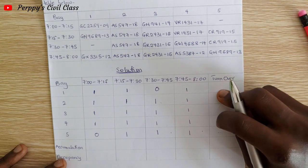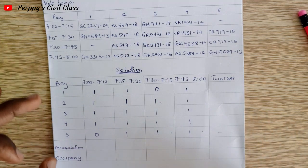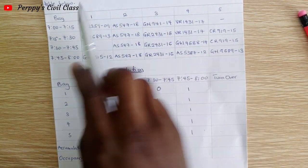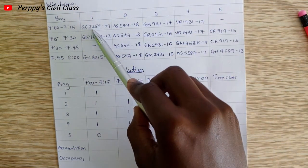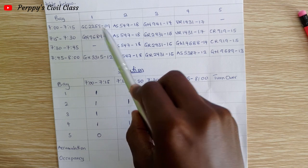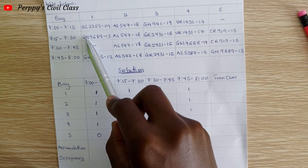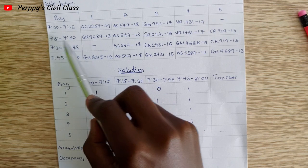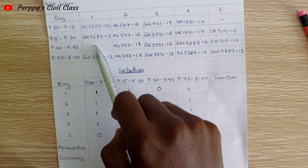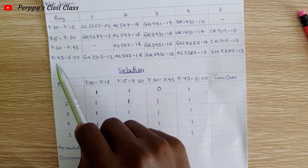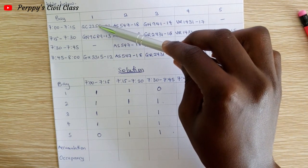Now for the turnover — we want to see the number of cars turning over, those that left and were replaced within the time interval. In Bay 1, from 7:00 to 7:15 the car parked was GC225909. From 7:15 to 7:30 a different car GN98689 was parked there. Between 7:30 to 7:45 no car was parked, and from 7:45 to 8:00 GX331512 was parked. So the turnover for B1 is three.